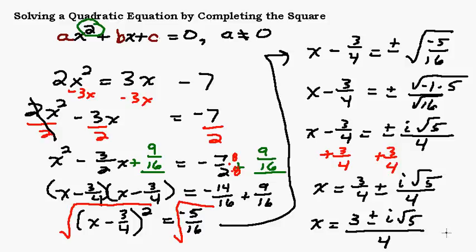We're going to get x by itself by adding 3 fourths to both sides. We have a common denominator, so we have x equals 3 fourths plus or minus i square root of 5 over 4. We could write that as one single fraction since there's a common denominator: 3 plus or minus i square root of 5, all over 4. You may also see it written with the i in front: i times the square root of 5 over 4. All these mean the same thing — just depends on how they want it written.